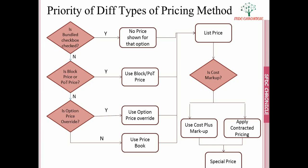Upon the list price, if a cost markup is defined then it applies the cost markup first. If no cost markup, it checks for contracted pricing, which is stored in the special price field and eventually flows into the net price. If there is neither cost markup nor contracted pricing, the list price becomes the net price that the customer pays.